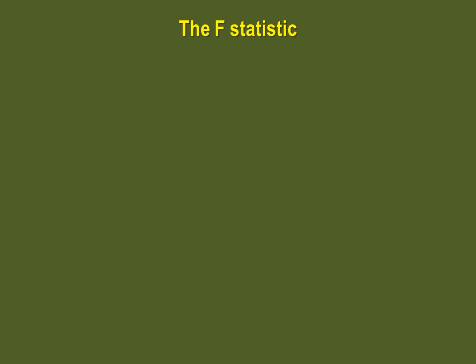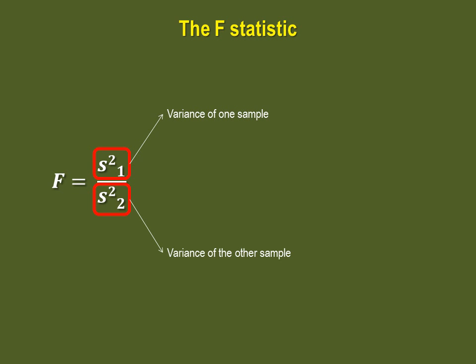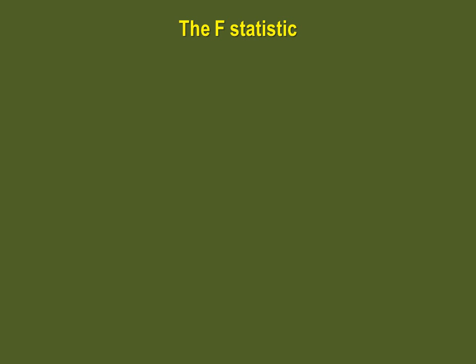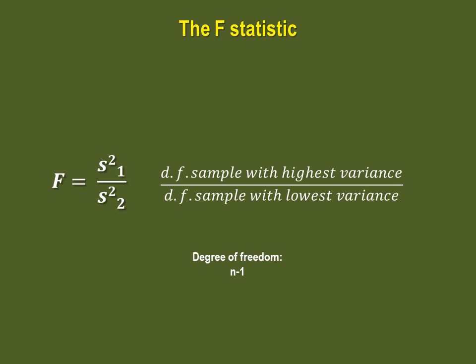Let me introduce the F-statistic and the F-sampling distribution. F is calculated by dividing the variance of one sample by the variance of the other sample. When you are doing a right-tailed test or a two-tailed test, you must put your highest variance as the numerator and the lowest variance as the denominator. Our F-statistic has two degrees of freedom — the n of individual samples minus one. You will have a degree of freedom for the numerator, which is for the sample with the highest variance, and a degree of freedom for the denominator, which is for the sample with the lowest variance.